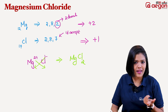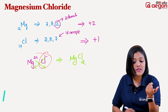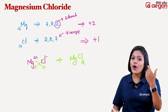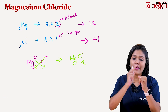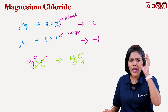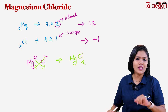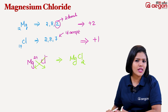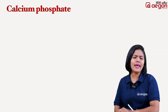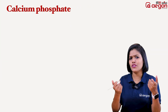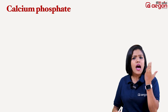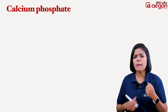So in ionic compounds we have cations — positive ions — and anions — negative ions. We write the chemical formula by balancing the charges of the cations and anions. That balance is what we call the cross-multiply method.